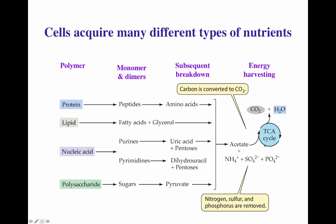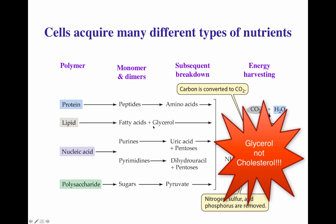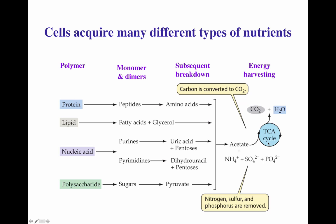Lipids are broken down into fatty acids and cholesterol, eventually becoming acetate in the form of acetyl-CoA, which enters directly into the tricarboxylic acid cycle. Nucleic acids are broken down into purines and pyrimidines. Purines are broken down into the sugar pentoses and uric acid, and everything gets broken down into acetate. The pyrimidines — dihydrouracil and the pentose — are also broken down back into acetate. Polysaccharides and sugars get broken down into pyruvate, pyruvate goes to acetate, and eventually it's acetyl-CoA. So by different reactions, all major macromolecules eventually enter the Krebs cycle as acetyl-CoA.